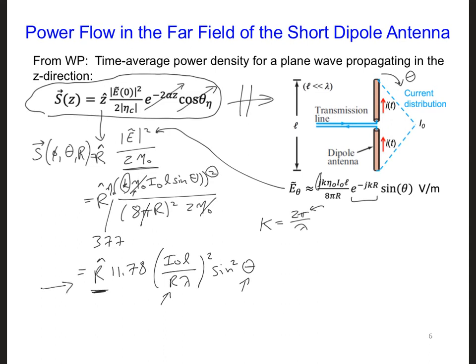Instead, it's convenient in the plot to just plot the normalized power density, which we'll call the normalized radiation intensity, F. F is going to be equal to S over S max. So it's dimensionless. Determine what F is for our short dipole antenna, and then also plot F so we can get a feel for how the short dipole radiates in each direction away from the antenna.